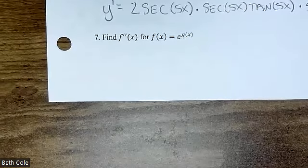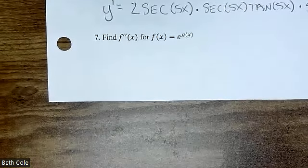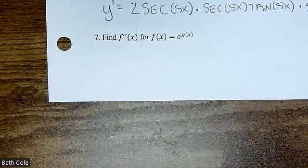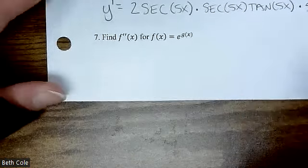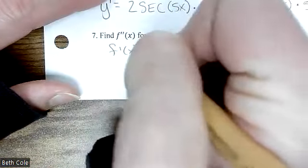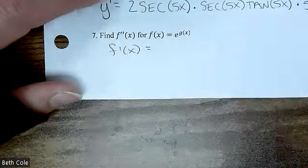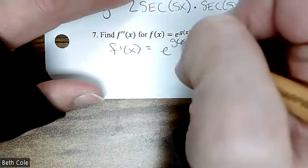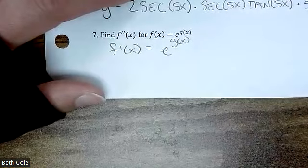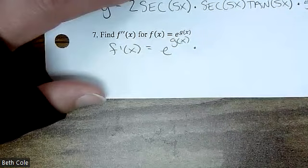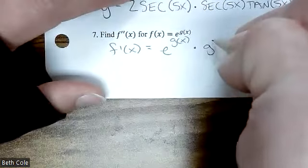What is number seven asking for? Were you guys the class that called it prime prime? That was my AP class — they called it prime prime. All right, so we want the second derivative. You can't jump straight there, so you have to get the first derivative first. The derivative of e is itself — it's just going to be e to the power G of X. It looks like we just recopied the problem, but then you have to chain on the derivative of G, so times G prime.